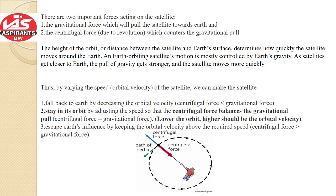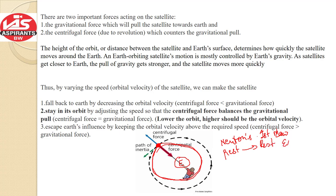Now let us see the science behind satellite or rocket launches. You have all seen or done this experiment of taking a stone on a string and spinning it — it will trace a circle. The same principle works when we launch a satellite. Suppose this person represents the Earth and the object represents the artificial satellite. Newton's first law of motion says that an object at rest will remain at rest, and an object in motion will remain in motion in a straight line, unless and until some external force is applied.